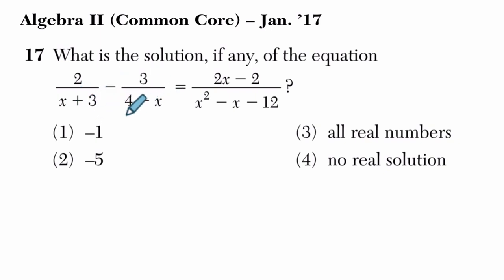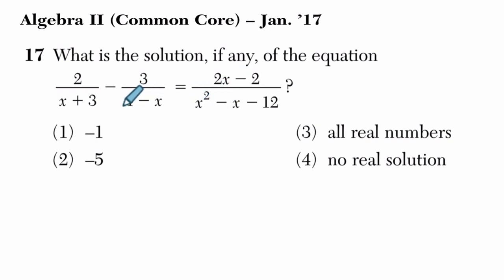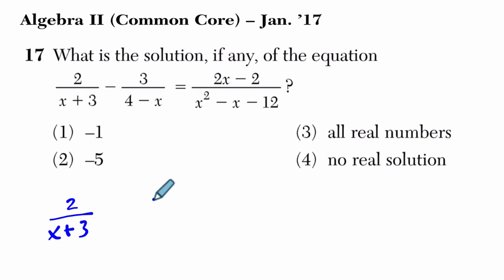Look at this — we've got x plus 3 and 4 minus x. If this is x plus 3 and x plus 4, that would multiply to this one right here, which would make our lives easier. I've seen this a lot: if you see a problem where this binomial is essentially backwards, fix it. Put it the way you want it. In other words, rewrite it as 3 over x minus 4.